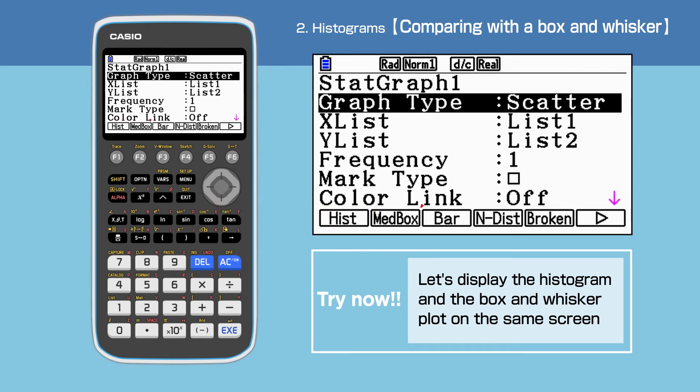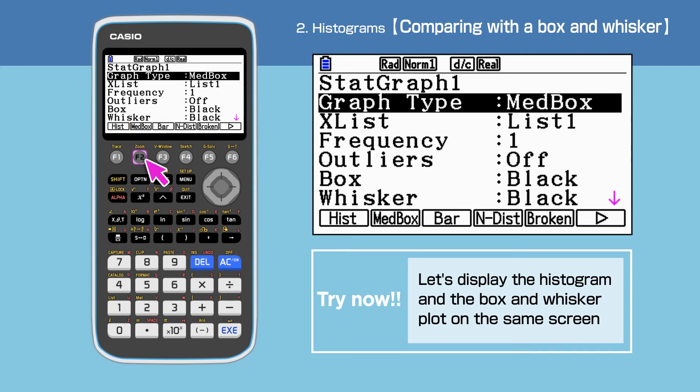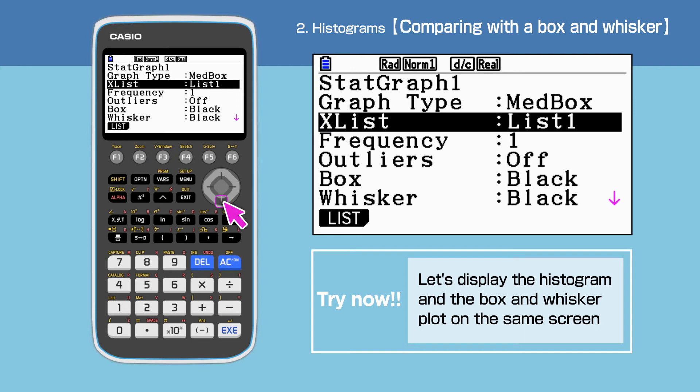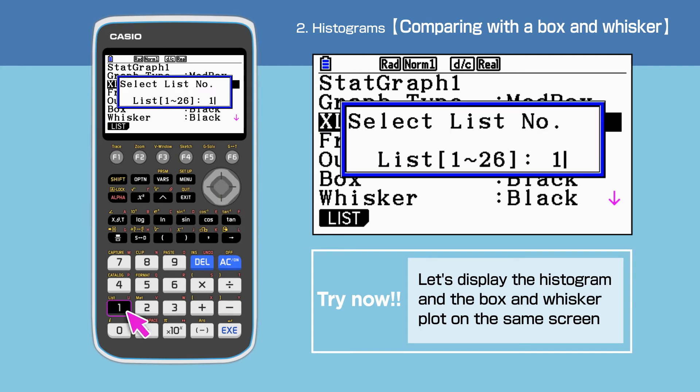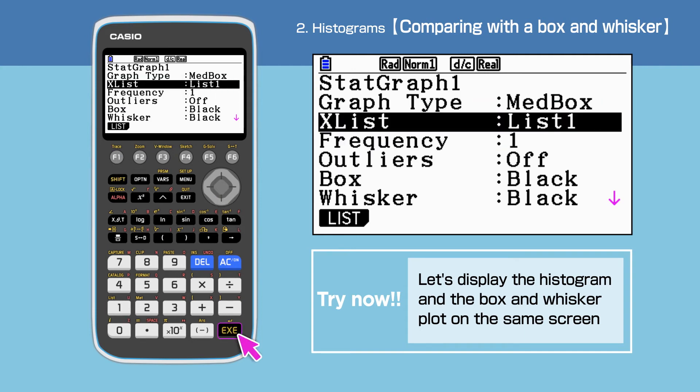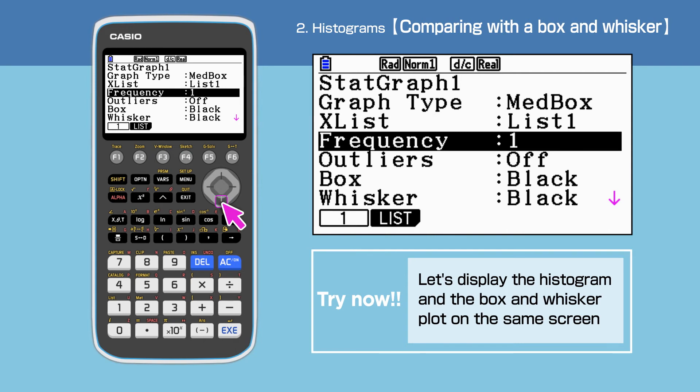Press F6, then F2 to select MedBox. Just like before, X list is list 1, and frequency is 1.